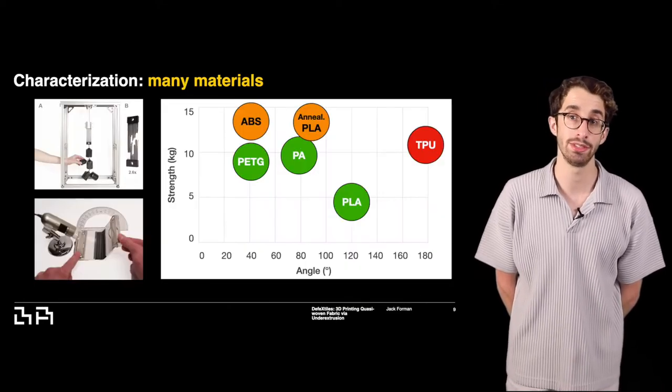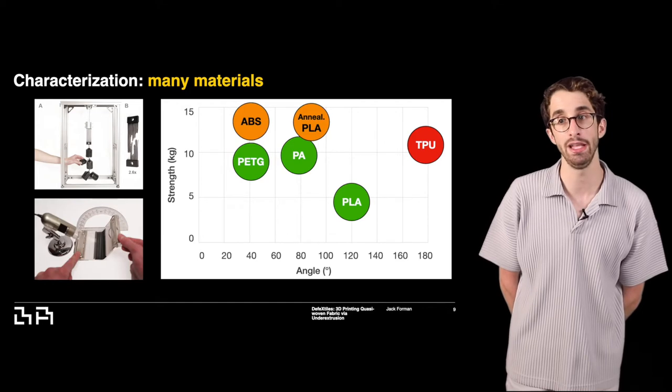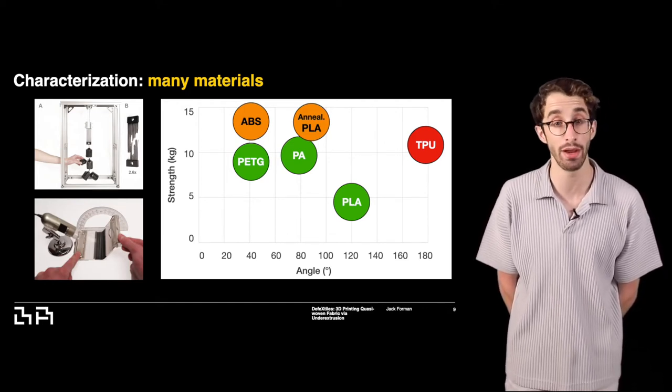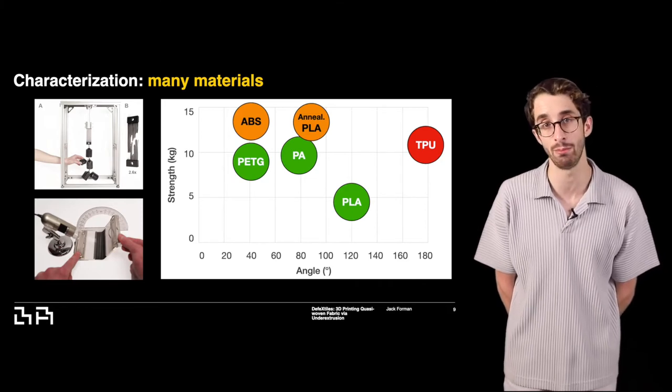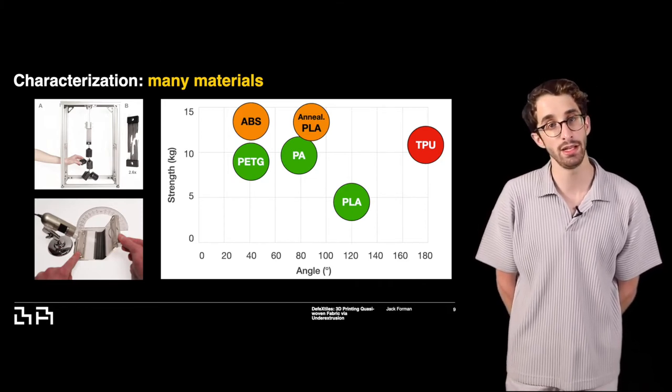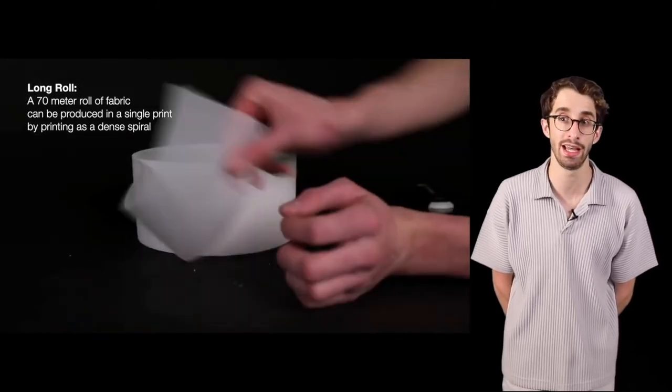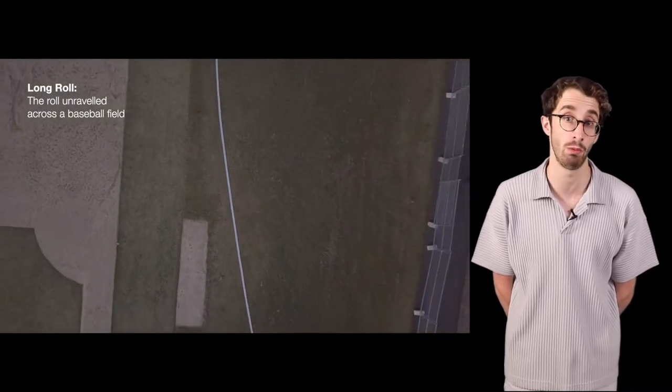We also performed characterization on Defextiles printed with a variety of common 3D printing materials. Generally, we prefer to use PLA. It had nice strength and flexibility and was very easy to print with. Defextiles are also very thin, around 0.3 millimeters. As a stress test, we filled a print volume with a Defextile roll and could produce 70 meters of fabric in a single print.